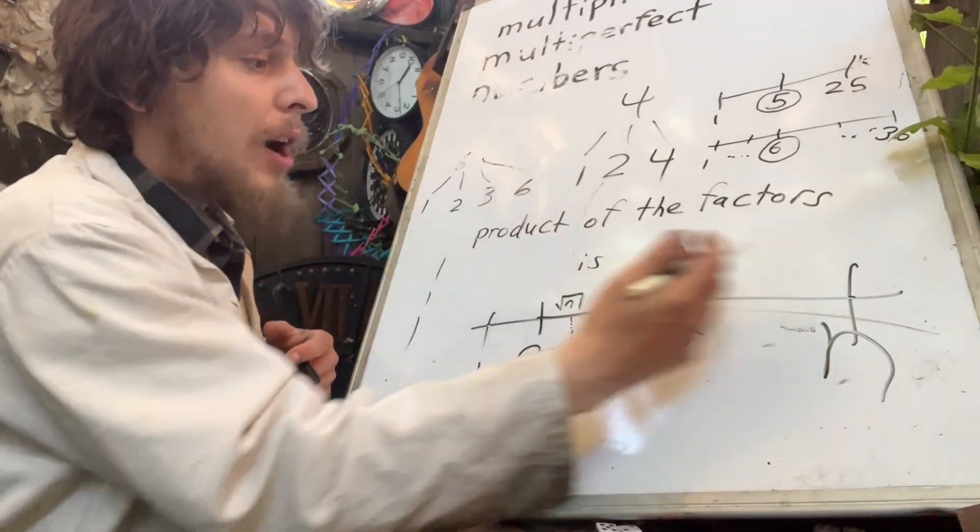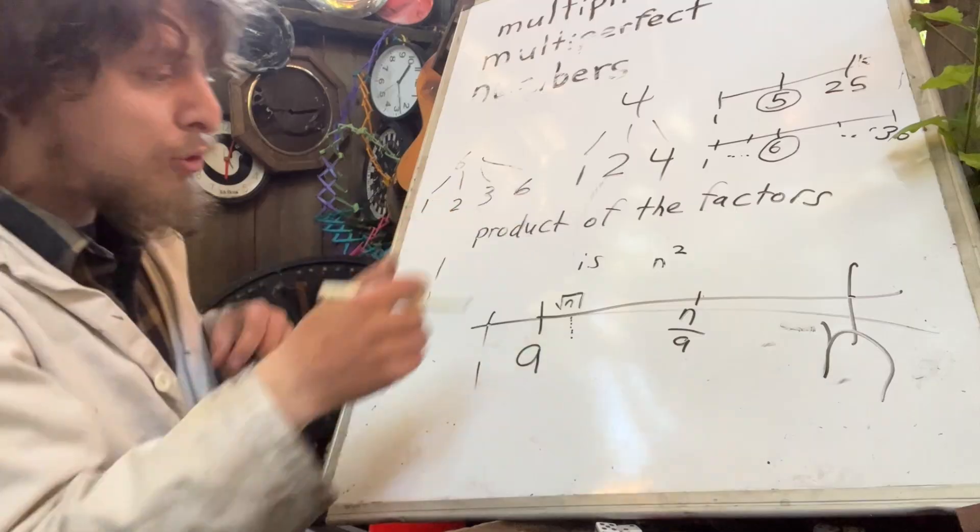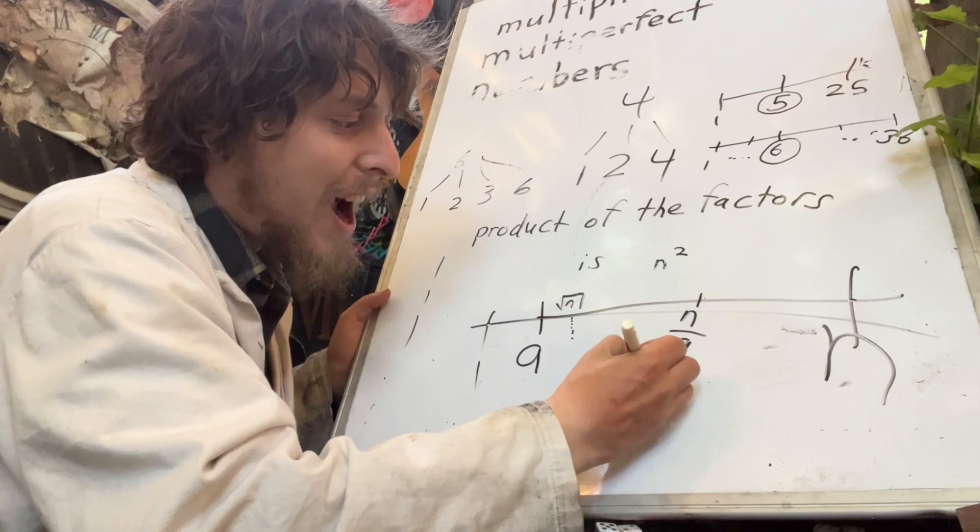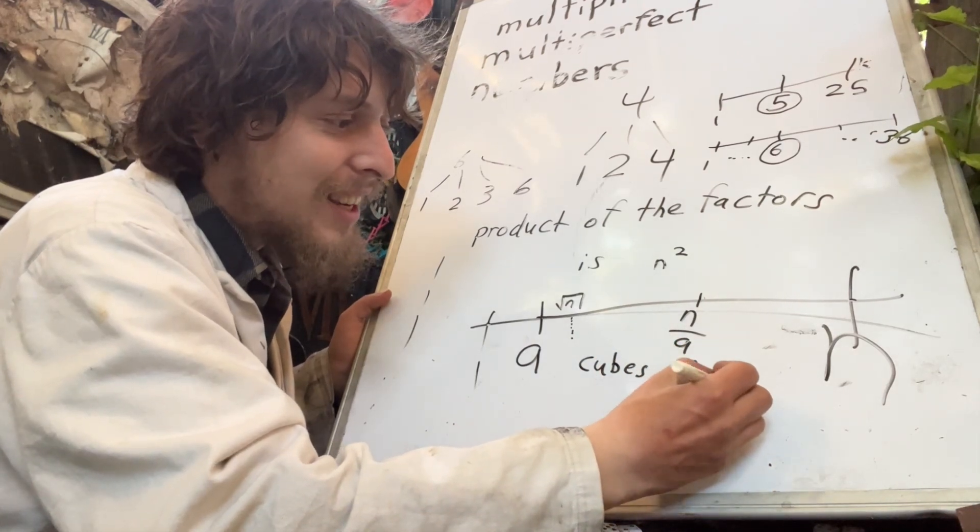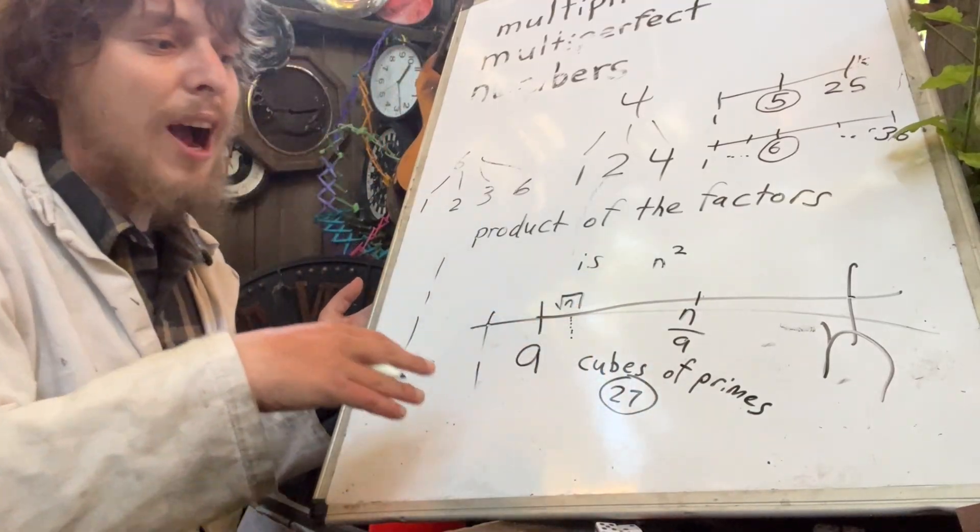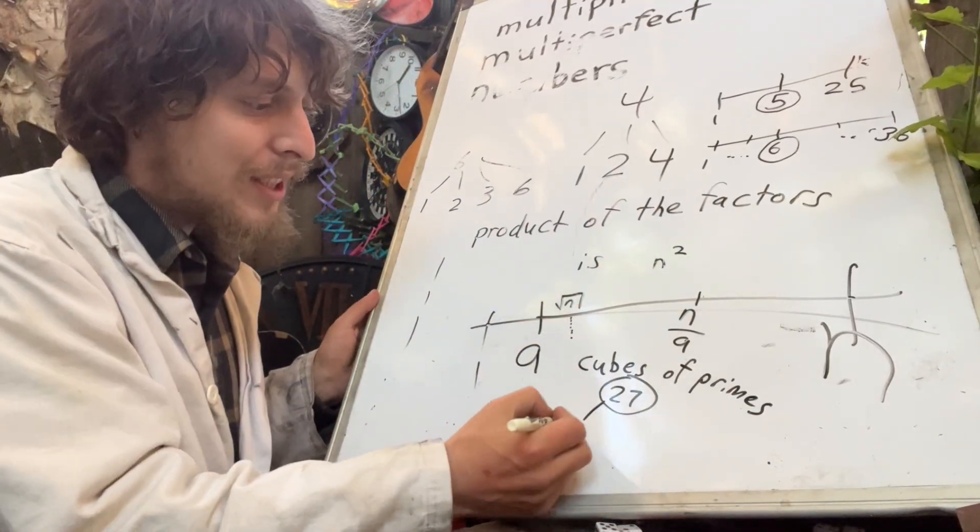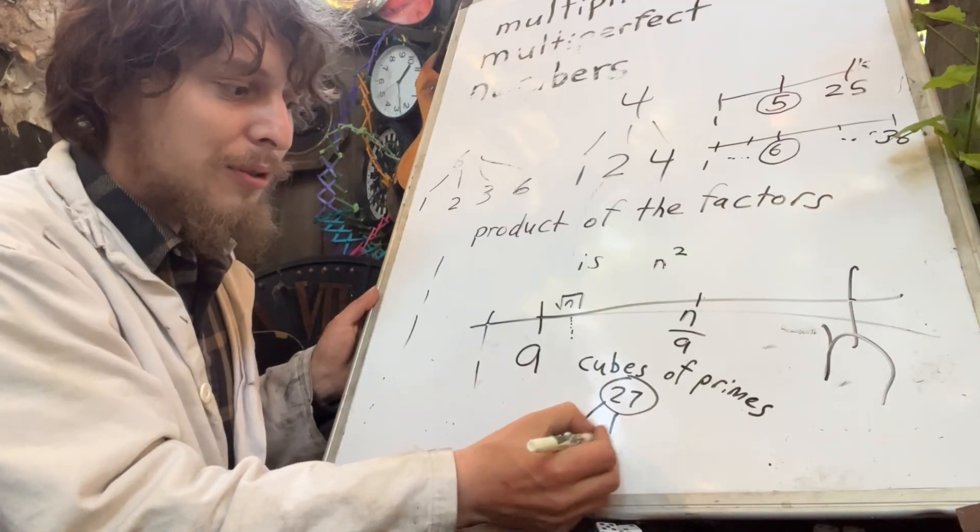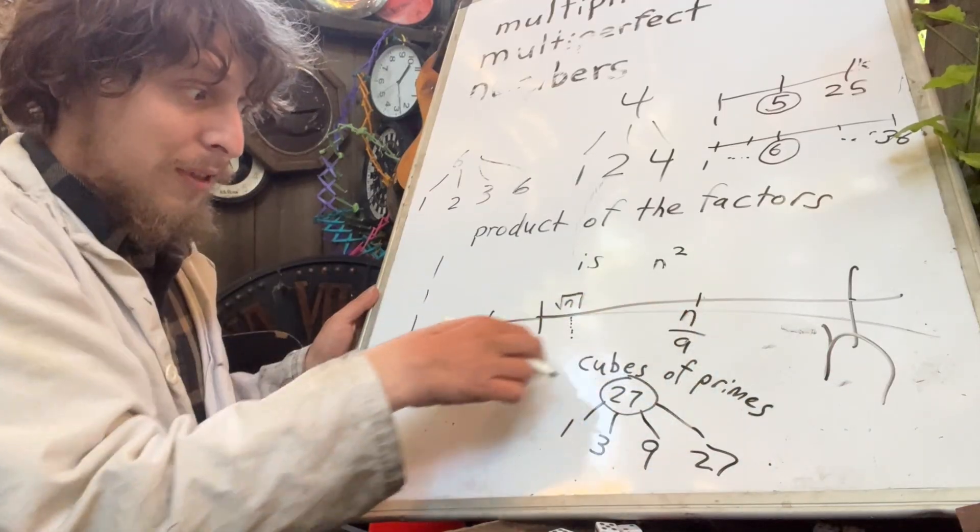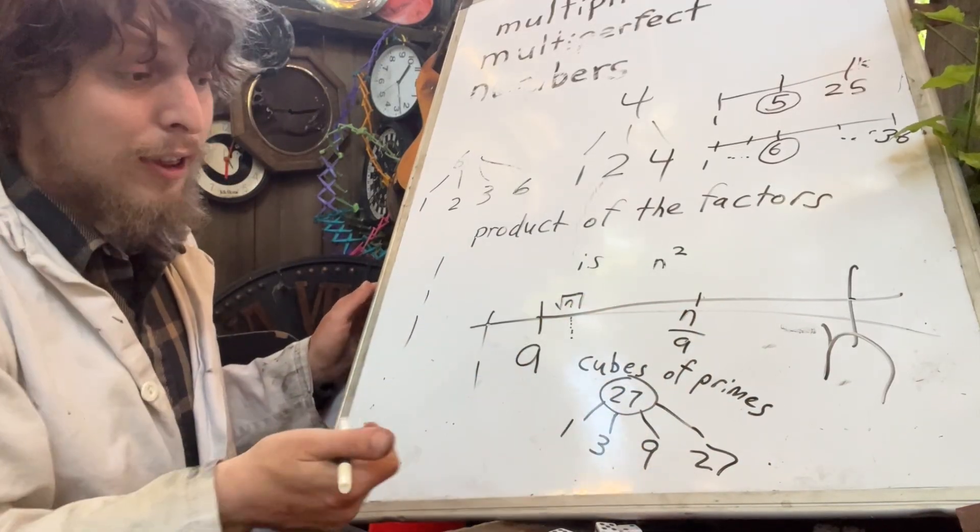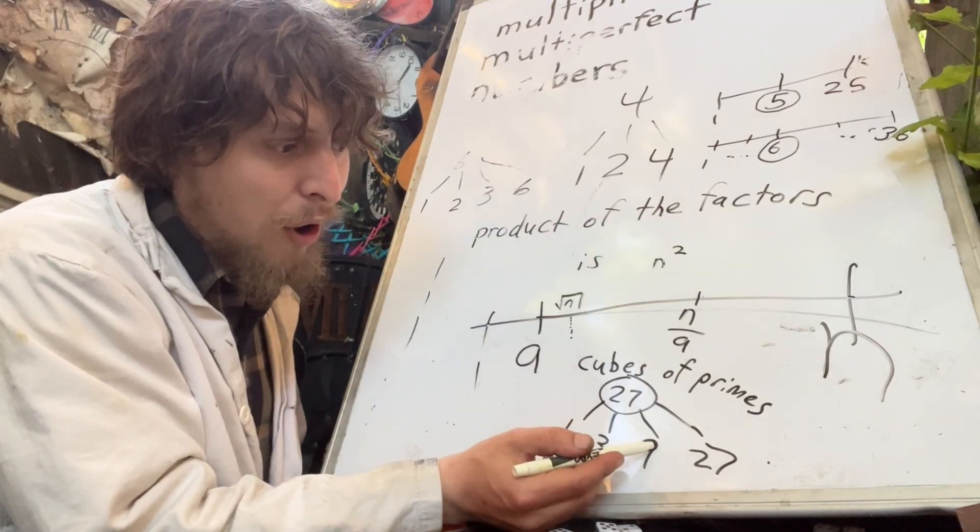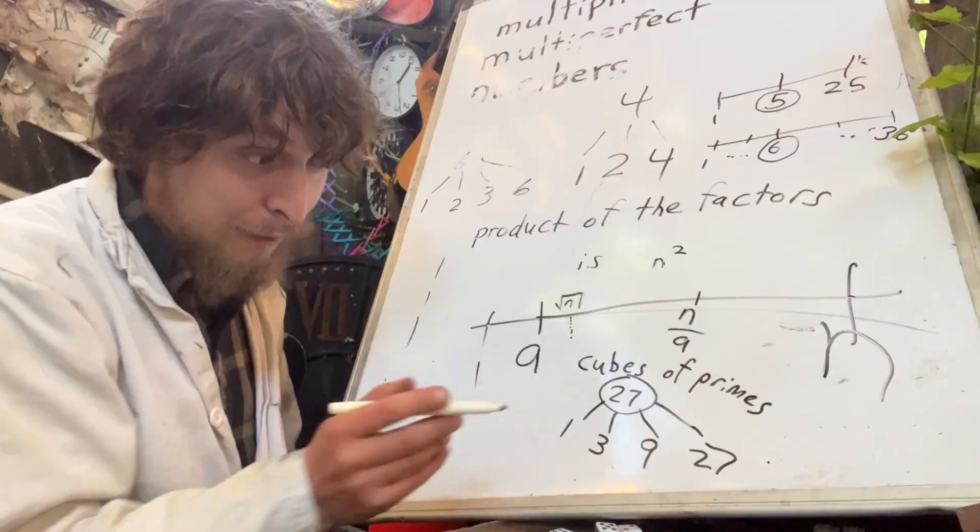Now, there's actually two families of numbers that could fit this particular trait. One of those would be the cubes of primes. And that's because if I take one of those, such as 27, which is the cube of the prime three, we'll notice I have 1, 3, 9, and 27. And it does work for this layout, ending up with four factors. But in this case, this factor was also a multiple of that factor.